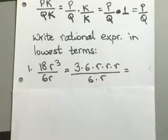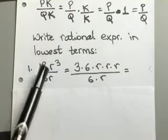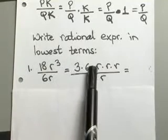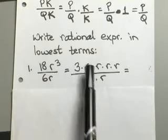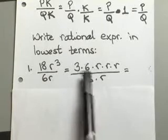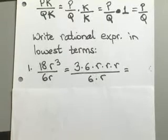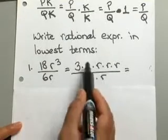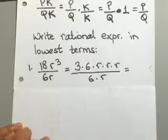Now, you will notice when I was breaking down 18, I broke it down into 3 times 6, and the reason I did that was because we can have a 6 in our numerator and a 6 in our denominator. Now, what this does for us is you can take all your common values between the numerator and denominator and cancel those out.